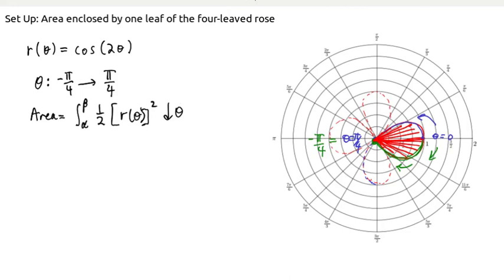And so all we have to do now is plug in everything that we've just thought about. So we plug in these boundaries for our α and β, and then we plug in this formula, cos(2θ), in for the radius function here.